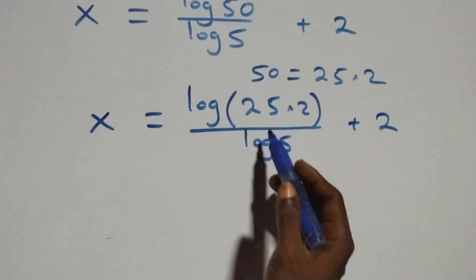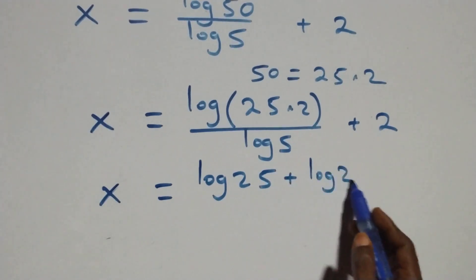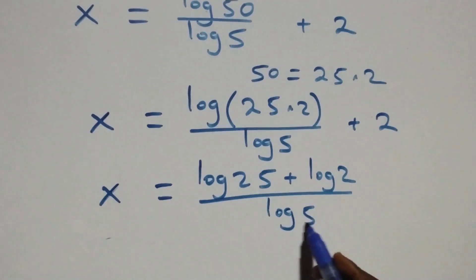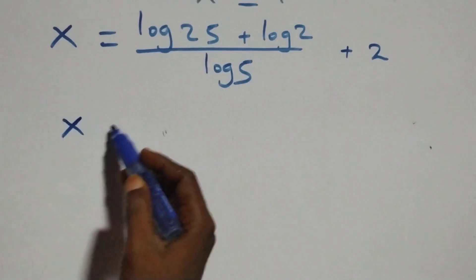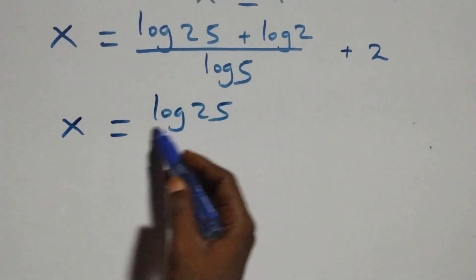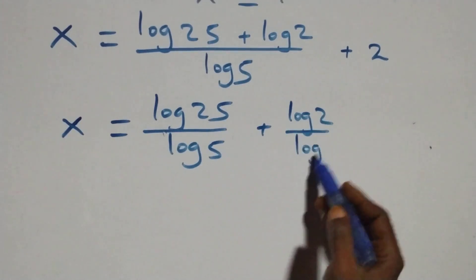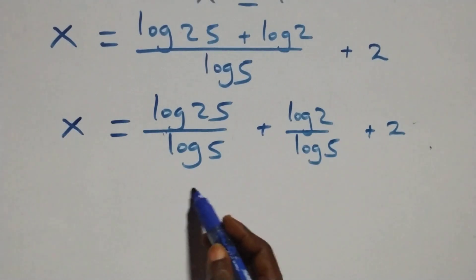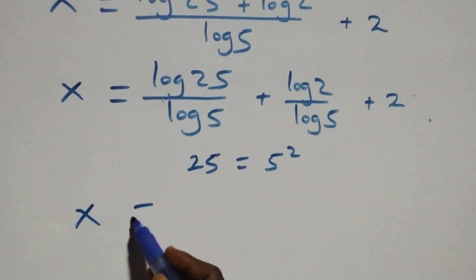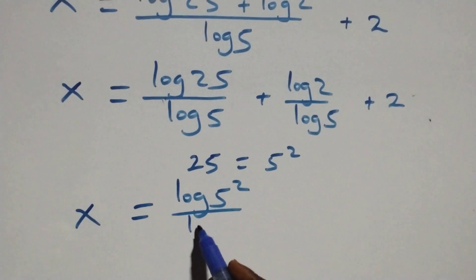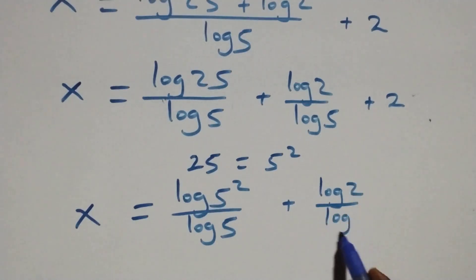This also follows the law of logarithm, and we have x equals to log 25 plus log 2 over log 5 plus 2. We separate into two fractions: x equals to log 25 over log 5 plus log 2 over log 5 plus 2. Since 25 is 5 squared, x equals to log 5 squared over log 5 plus log 2 over log 5 plus 2.